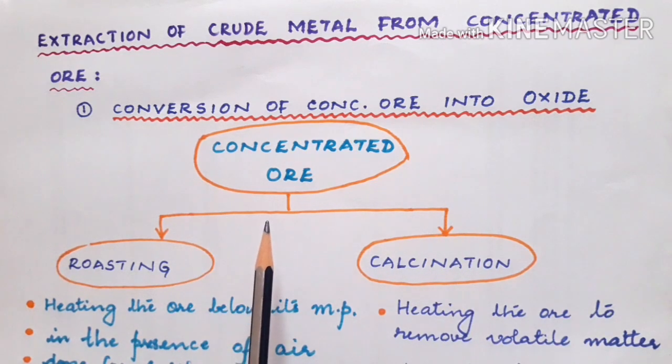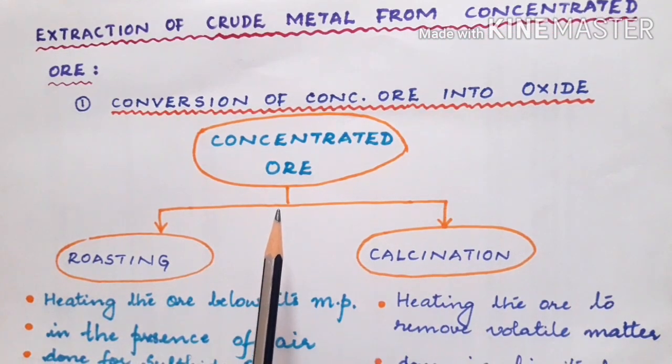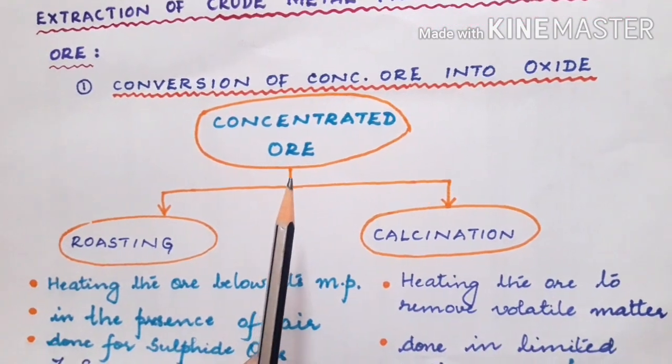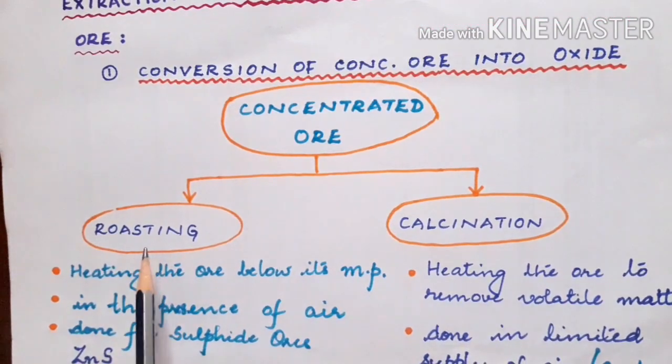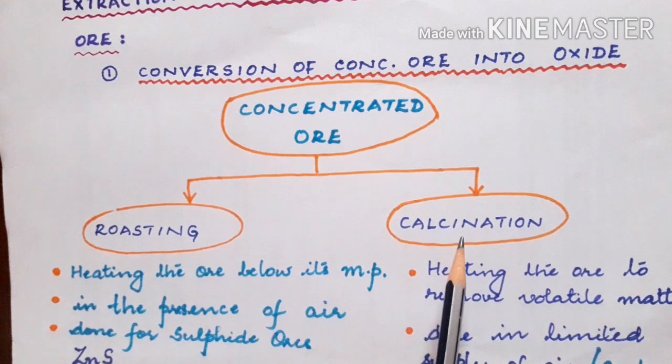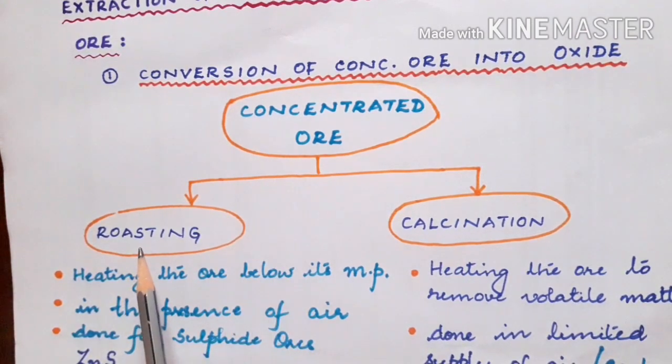The concentrated ore is taken and is subjected to either roasting or calcination. How to choose the method? That depends upon what type of ore you have.